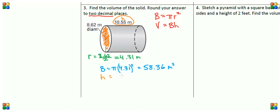We found our height was equal to 10.55 meters, so now let's figure out our volume. Our volume is the area of the base times the height, which is equal to 58.36 times 10.55. Let's take a look at our calculator again.